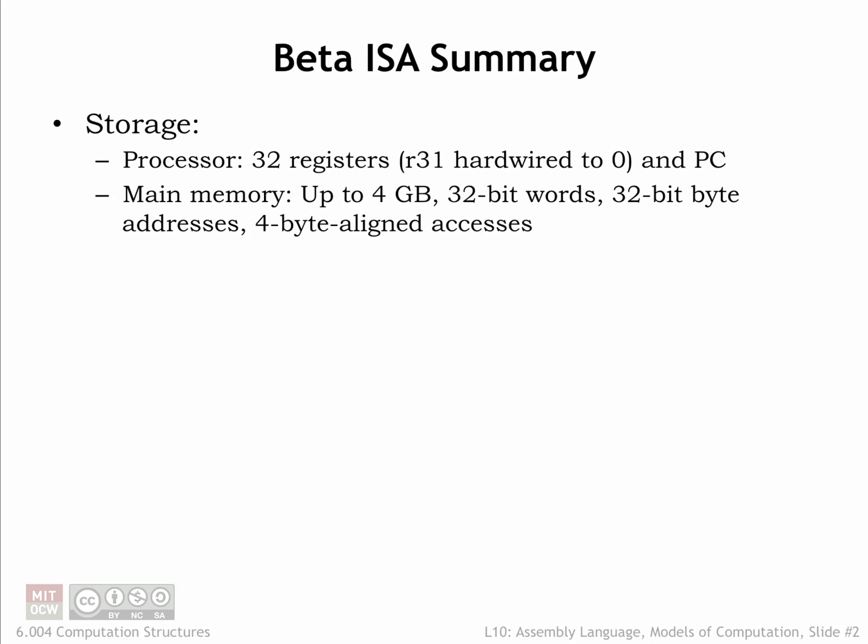In the previous lecture we developed the instruction set architecture for the beta, the computer system we'll be building throughout this part of the course. The beta incorporates two types of storage or memory. In the CPU data path there are 32 general-purpose registers, which can be read to supply source operands for the ALU or written with the ALU result. In the CPU's control logic there is a special-purpose register called the program counter, which contains the address of the memory location holding the next instruction to be executed.